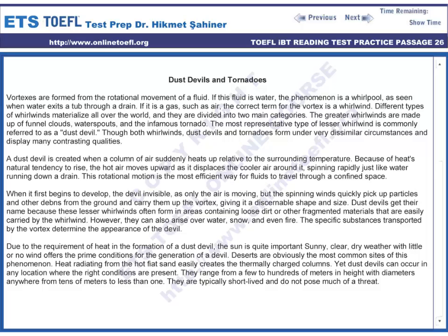Different types of whirlwinds materialize all over the world, and they are divided into two main categories. The greater whirlwinds are made up of funnel clouds, water spouts, and the infamous tornado. Though both whirlwinds, dust devils and tornadoes form under very dissimilar circumstances and display many contrasting qualities.